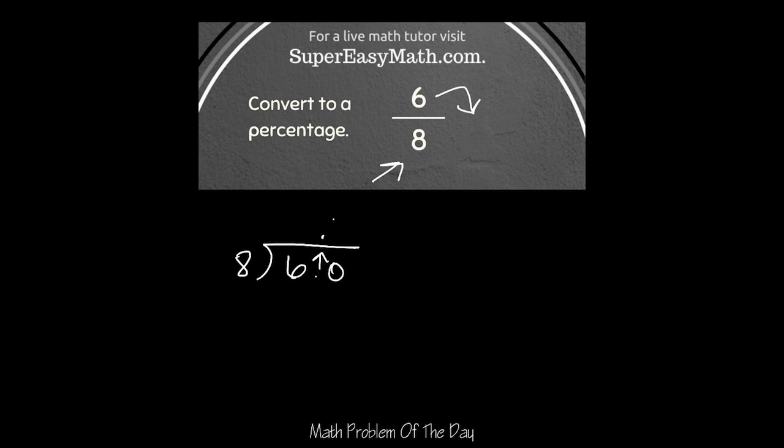So 8 goes into 60 seven times, and that's 56. When you subtract, you get 4. Add another 0, bring it down. 8 goes into 40 five times, and that's evenly. Subtract, I'm gonna get 0. That lets me know that I'm done with my division because I got 0 and there's nothing left to bring down.